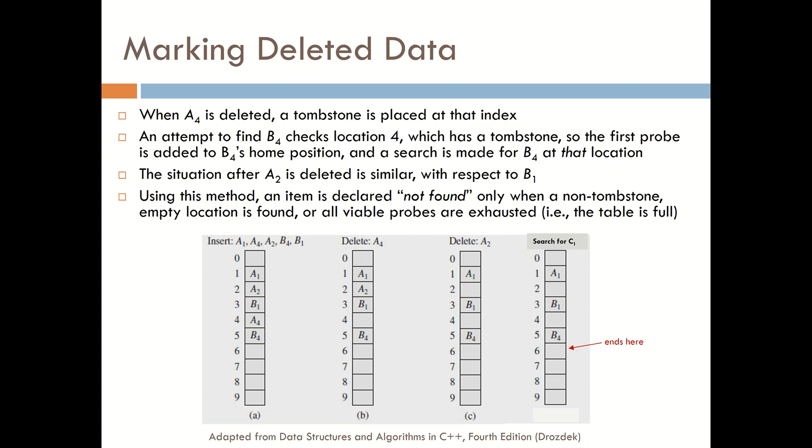And then subsequently we remove A4. So basically what we're saying is we're removing this item. And when we do that, we will mark that location and we'll just do it in all subsequent positions. We'll mark that location with a tombstone.